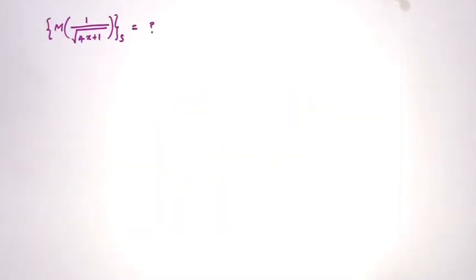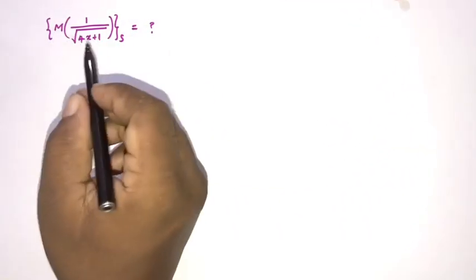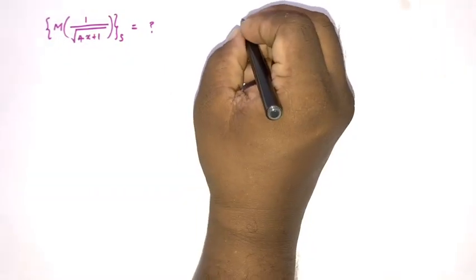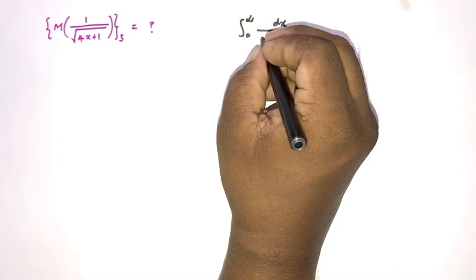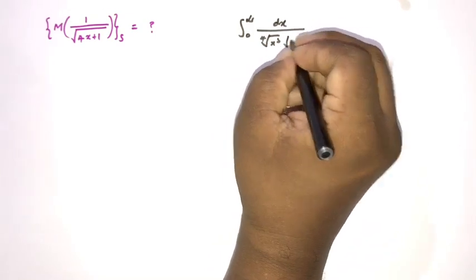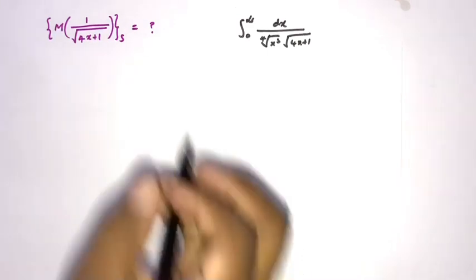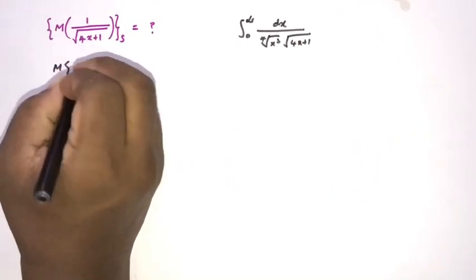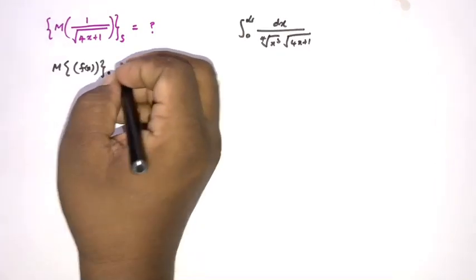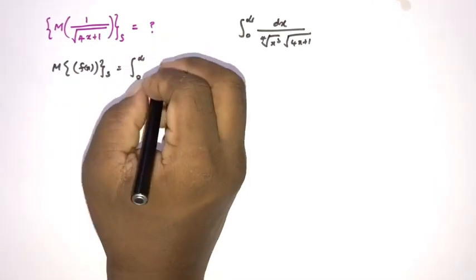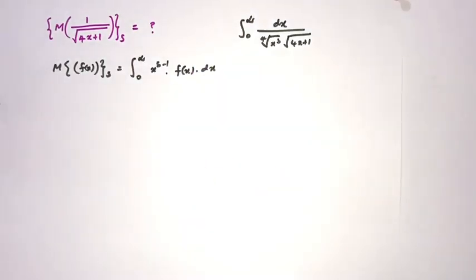Welcome to the Mathematics and My channel. In this video we are going to find the Mellin transform of 1 over square root of 4x plus 1, then we are going to evaluate the integral from 0 to infinity of dx over the fourth root of x cubed times the square root of 4x plus 1. First, we know the definition of the Mellin transform: the Mellin transform of f(x) is equal to the integral from 0 to infinity of x to the s minus 1 times f(x) dx.